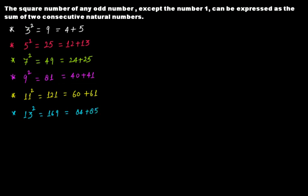Now if you look at these pairs: 4 and 5 are two consecutive natural numbers; 12 and 13 are two consecutive natural numbers; 24 and 25 are two consecutive natural numbers; 40 and 41; 60 and 61; 84 and 85 — we can see a pattern. The square of any odd number can be written as the sum of two consecutive natural numbers.